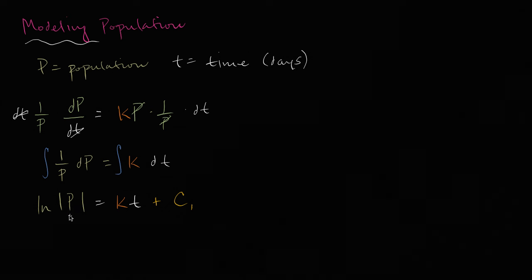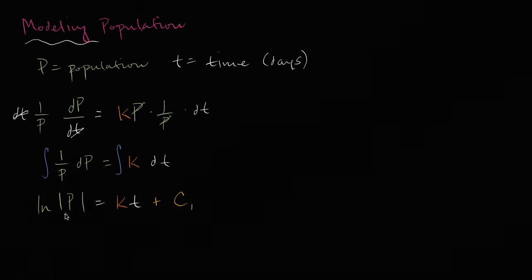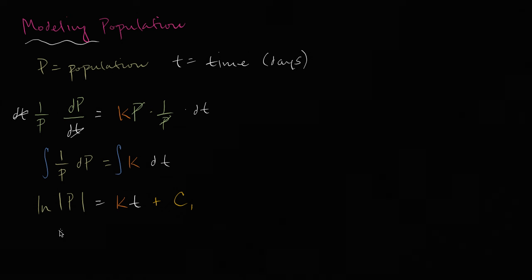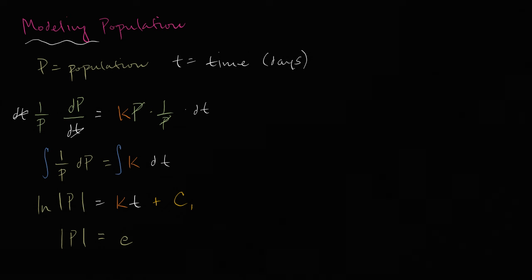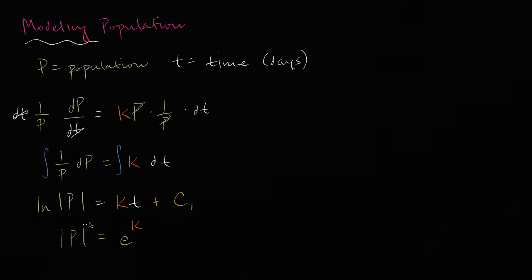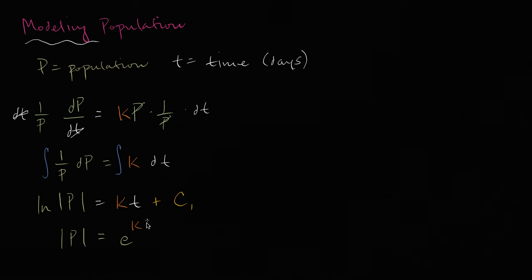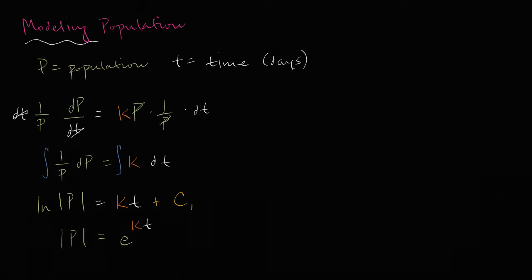Now, how can I solve for P? Well, the natural log of the absolute value of P is equal to this thing right over here. That means that the absolute value of P is equal to e to all of this business. e to the kt, kt plus, plus c1.